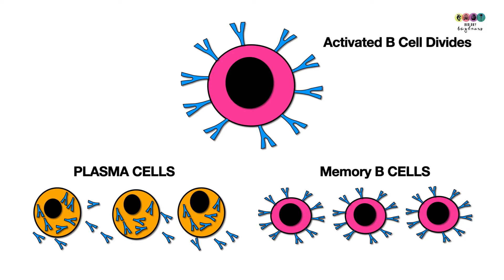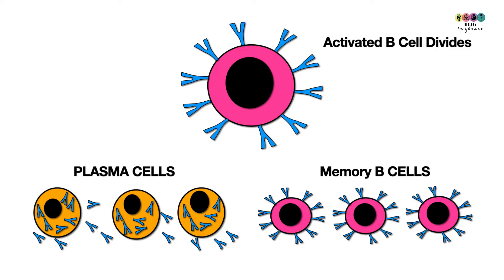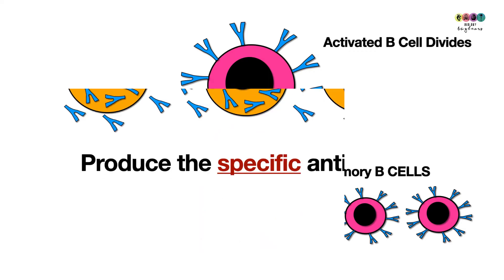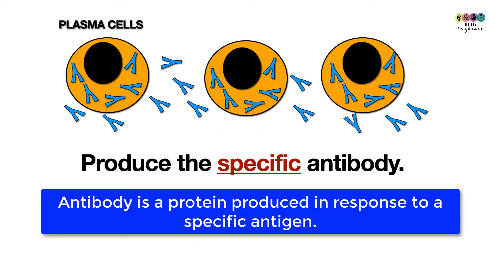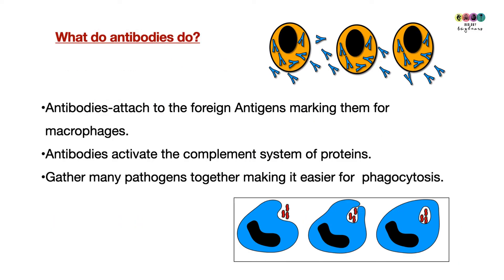When the B cell is activated it undergoes cell division, producing many plasma cells and also many memory B cells. The plasma cells are very special because they make antibodies specific to that antigen. Remember that plasma cells produce the antibody, and an antibody is a protein that is produced in response to a specific antigen — that's a really important definition.